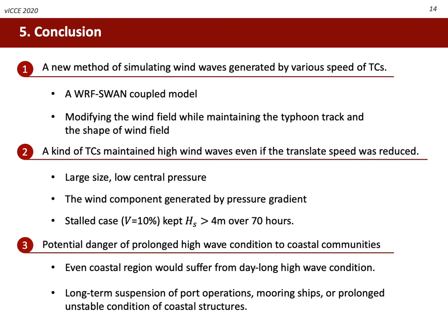These are the main conclusions of this study. A new method based on a WRF-SWAN coupled model was introduced to simulate wind waves with a variation of the translate speed of typhoons. A unique modification process to the wind field was provided utilizing an empirical typhoon model. Some features of slow-moving typhoons were identified as potentially dangerous: since the pressure gradient has a stronger effect on the wind field than the translation, the high wave condition would last longer even with typhoons almost stationary. Communities should pay attention to the potential danger of prolonged high wave conditions, as a day-long high wave condition could be expected even in coastal regions. We might need to prepare for long-term suspension of port operations, mooring of ships, or structural design against prolonged unstable conditions.